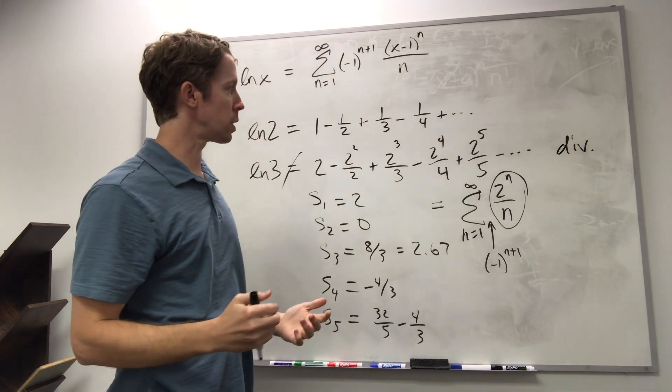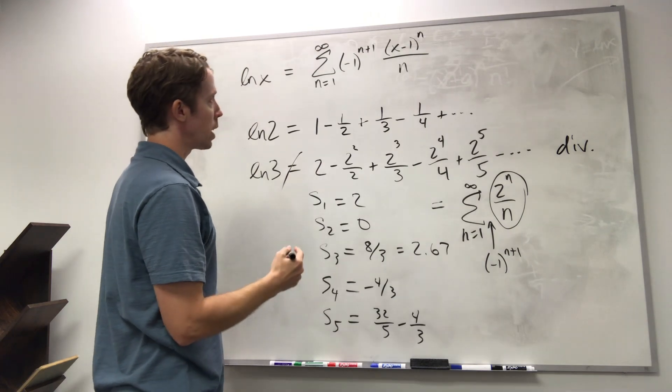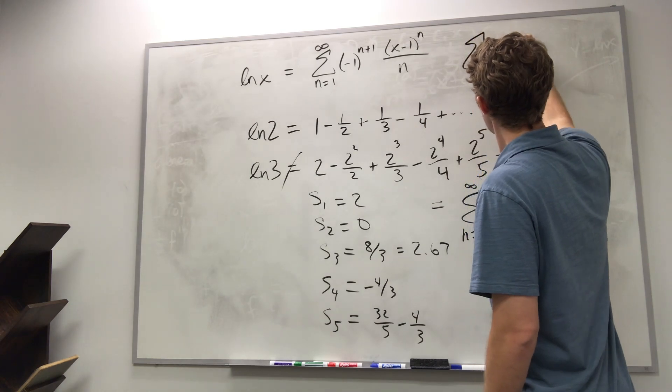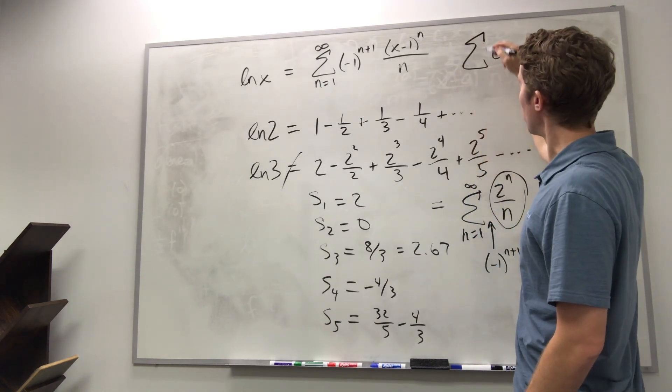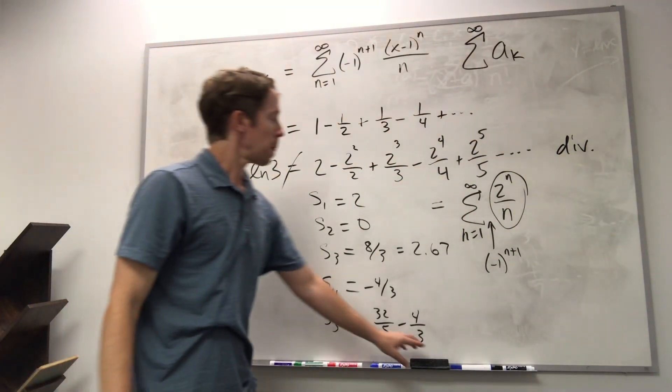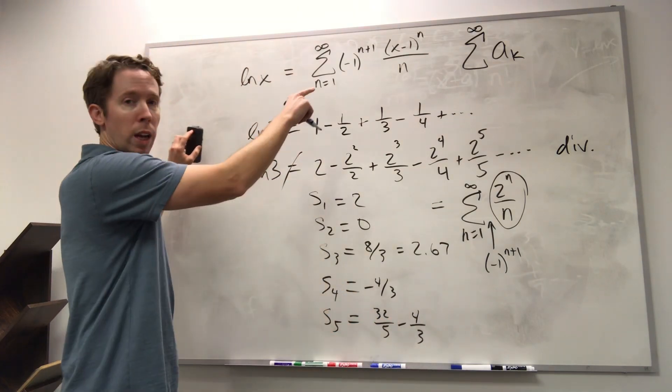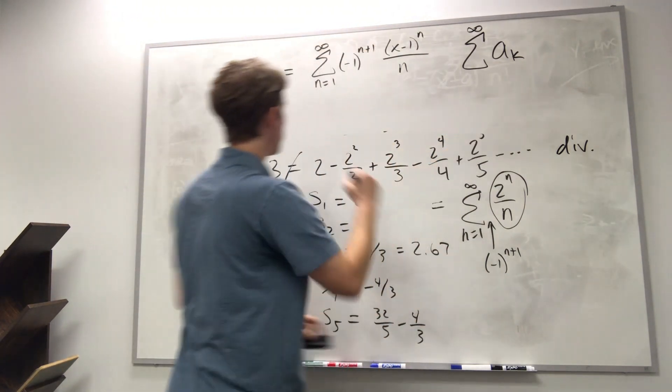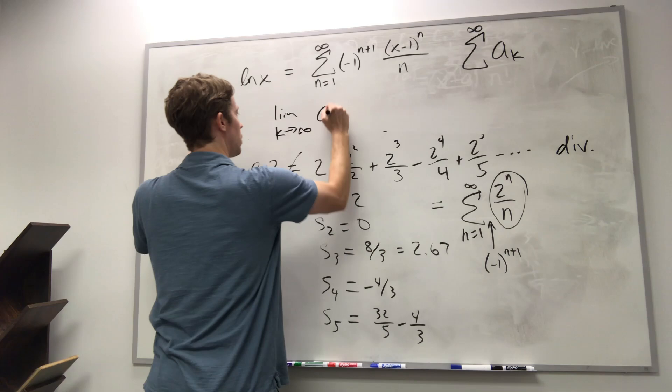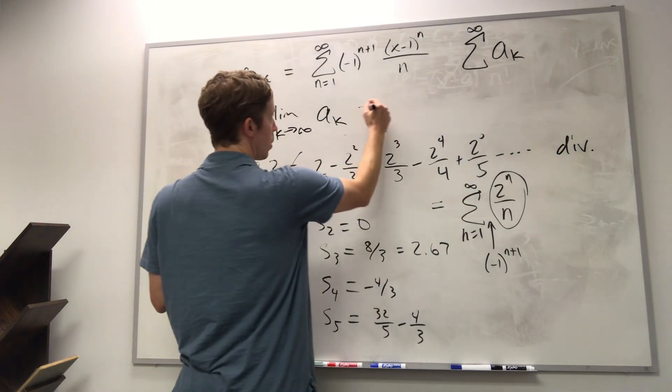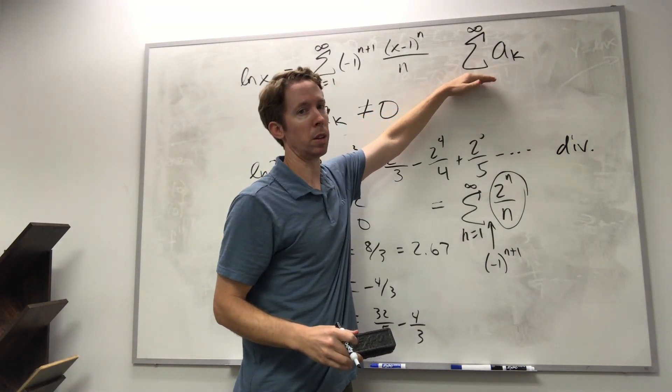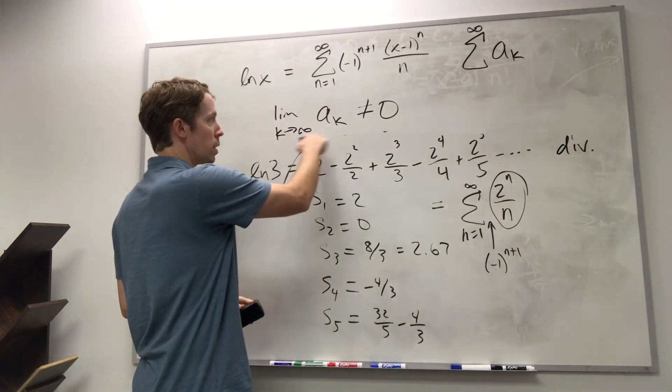This test is referred to as the divergence test. And what it says is that if you have a general series, just the sum of ak, it doesn't matter where you start. You start at some finite number, you let it go to infinity, so we've got an infinite series. In that context, if you look at the limit as k goes to infinity of those terms, if that limit is not zero, then this series cannot possibly be convergent.